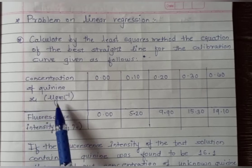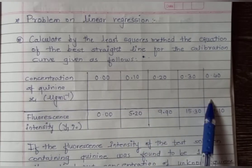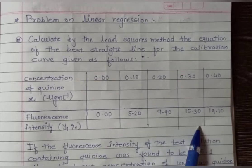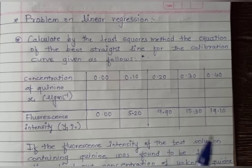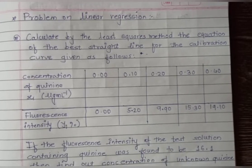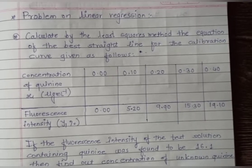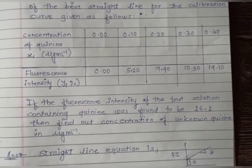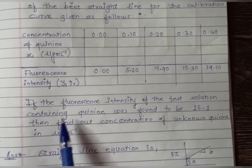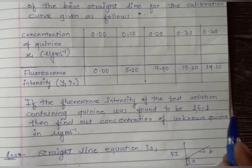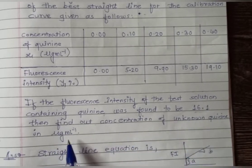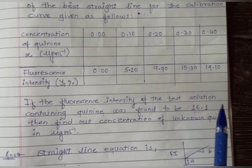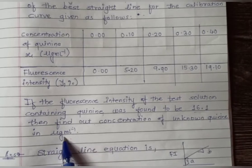The data given: concentration of quinine x_i in micrograms per mL (5 values), and fluorescence intensity y_i: 0, 5.20, 9.90, 15.30, and 19.10. We need to find the best straight line equation y = bx + a, meaning we first find b and a. Additionally, if the fluorescence intensity of an unknown quinine test solution is 16.1, we must find the concentration of the unknown quinine in micrograms per mL.